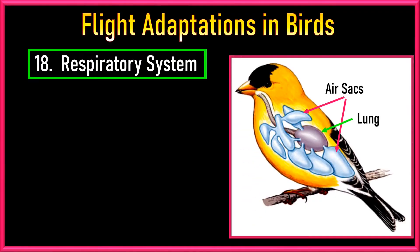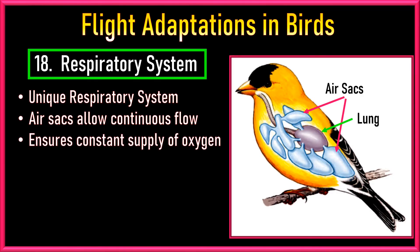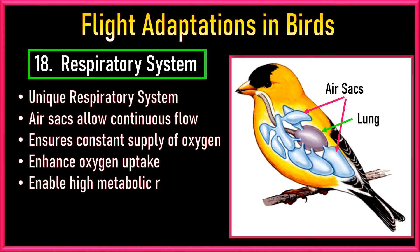Number 18: Respiratory System. Birds have a unique and efficient respiratory system featuring air sacs that allow for a continuous flow of air through the lungs. This system ensures a constant supply of oxygen during both inhalation and exhalation, enhancing oxygen uptake and supporting the high metabolic rate necessary for flight. For details of the respiratory system, watch our dedicated video on the bird respiratory system with animated mechanism.